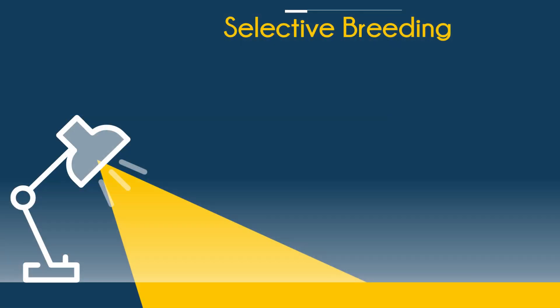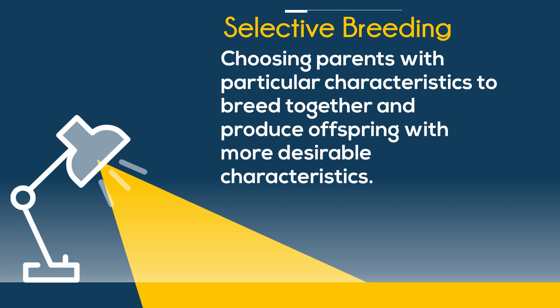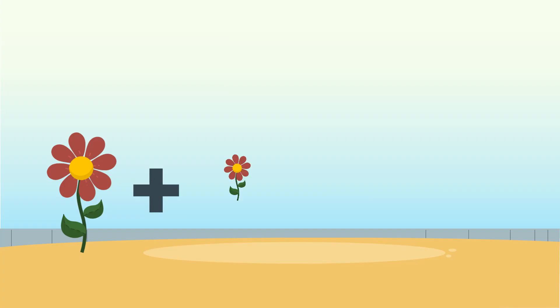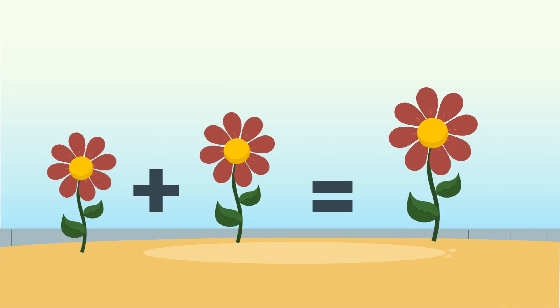Next, selective breeding. It's choosing parents with particular characteristics to breed together and produce offspring with more desirable characteristics. And we're gonna breed these two plants to get an even better plant.